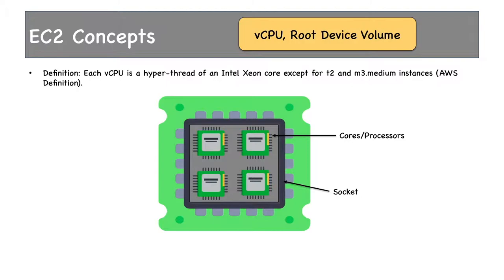If you have four CPUs or four processors, at any point in time you'd have four programs running simultaneously. This changed when Intel launched their first-generation CPU, Nehalem. What they did was make CPUs such that each CPU can execute two programs at a time. Each such execution is called a thread. So if you have four processors, you could have eight programs running at the same time, or eight threads. These threads are called vCPUs.